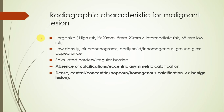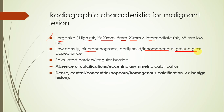Here is a list of radiographic characteristics of malignant lesions. The larger the size, the higher the risk of being malignant. If it is more than 20 millimeters it is high risk; if it is between 8 to 20 millimeters it is moderate risk; and if it is less than 8 millimeters the risk is very low. Radiographic appearances such as low-density air bronchograms, inhomogeneous lesions, and ground-glass appearance are associated with a high chance of malignancy.